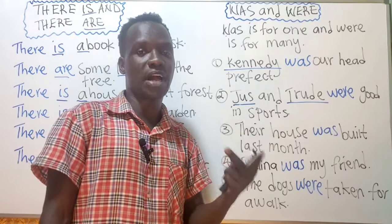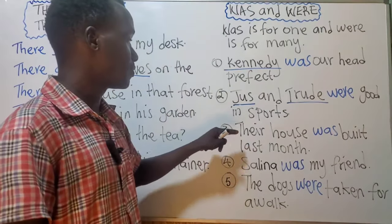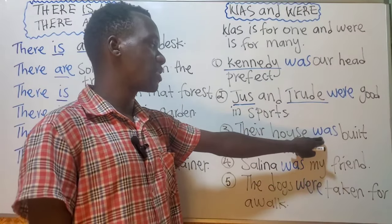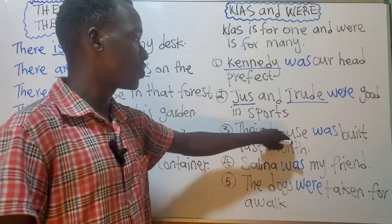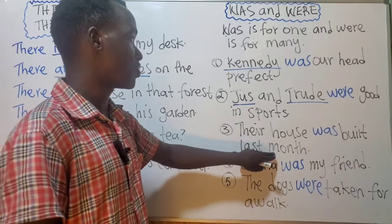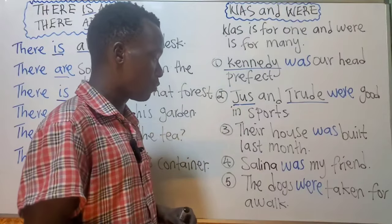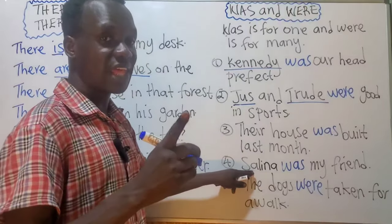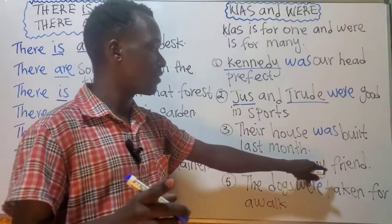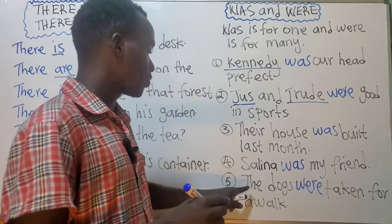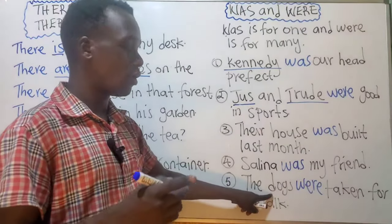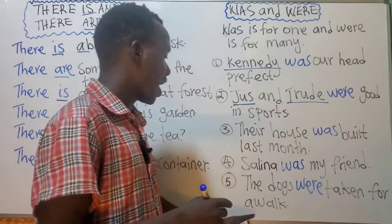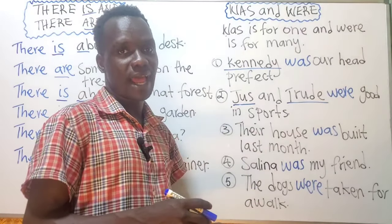Their house is only one house, so it is supported by 'was': 'Their house was built last month.' Selena is one person, so: 'Selena was my friend.' The dogs have an 's,' so there are many dogs, and we use 'were': 'The dogs were taken for a walk.' Remember to subscribe, like, and share.